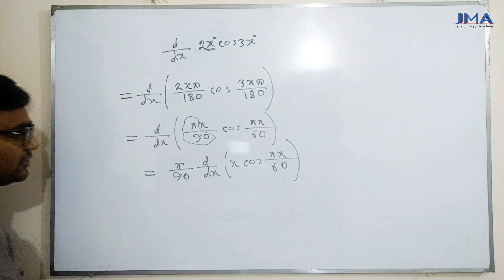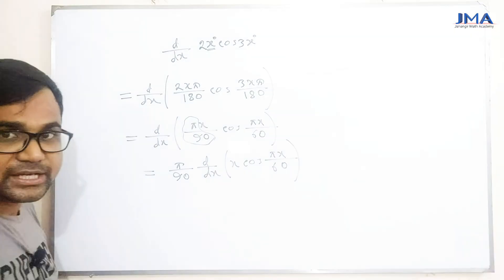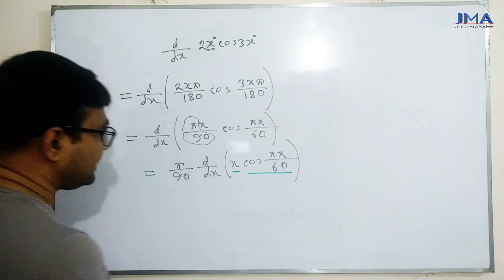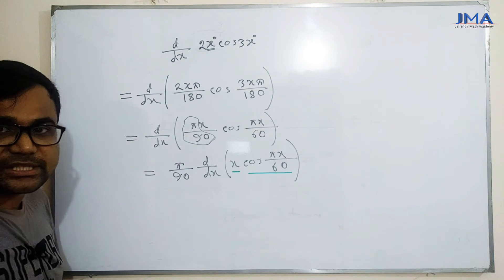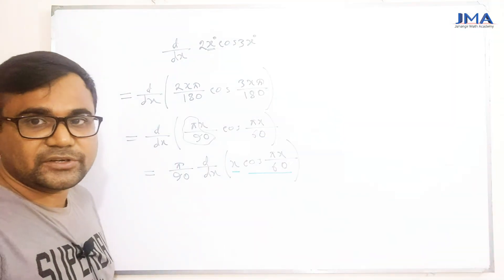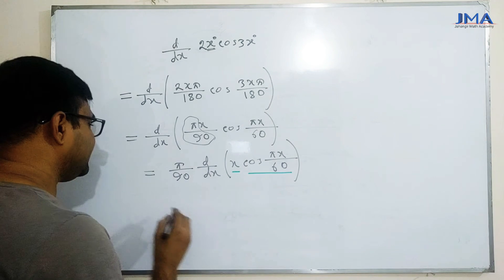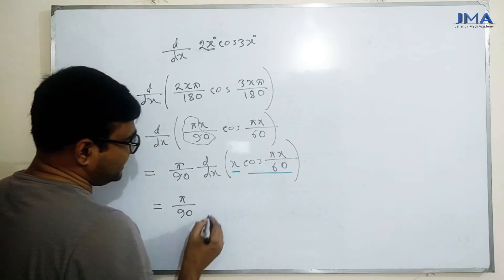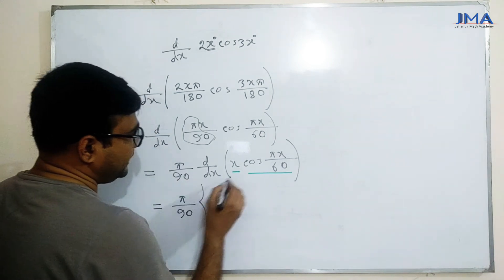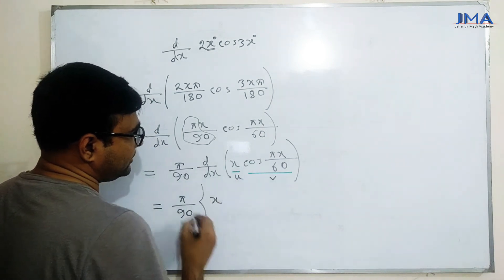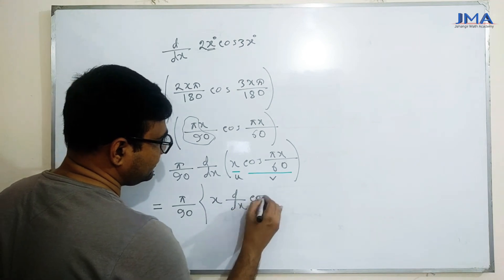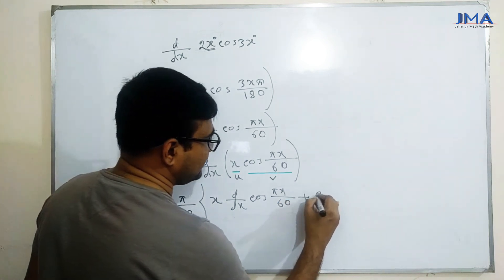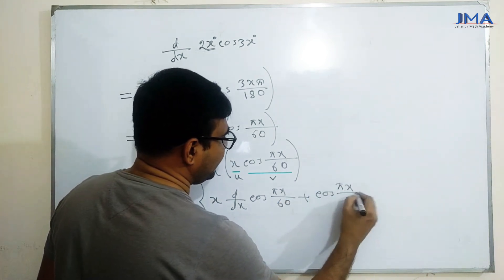અહીં આપણે અંતર કરણ કરીએ. જ્યારે 2 આવે, ત્યારે x ને u રાખો. u = pi x by 60. d/dx of pi x by 60 plus phi pi x by 60.